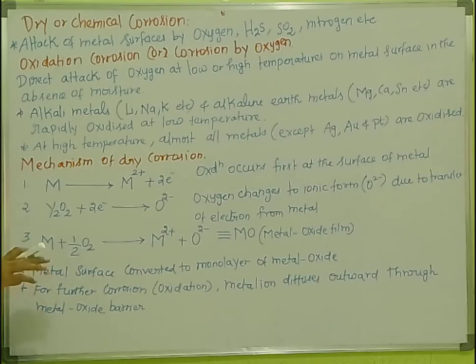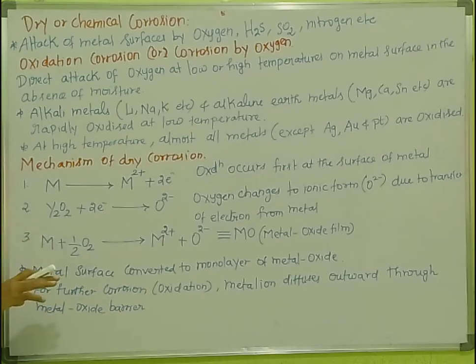The metal surface becomes darker. That is the main result. Dry corrosion causes this darkening of the metal surface.